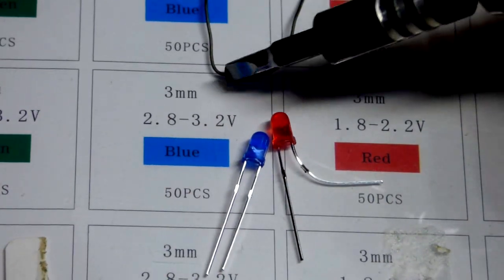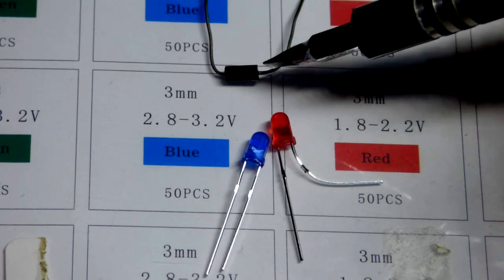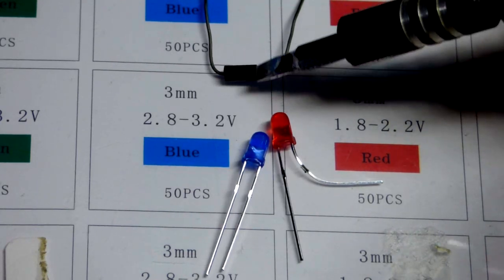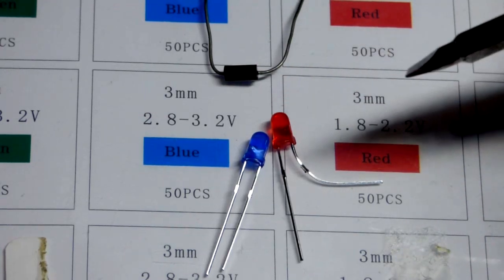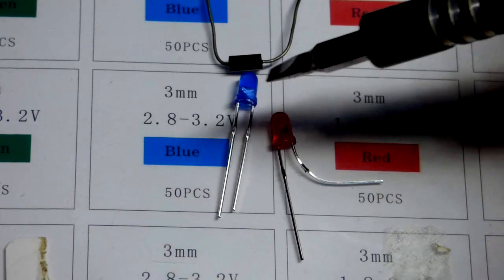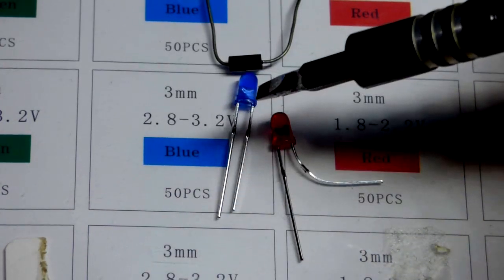As you can see there, 2.8 to 3.2 volts it says on there. Rectifier diodes, these are silicon, they basically only need about 0.6 to 0.7 volts before they start conducting. There's a gray band right there. The gray band is the cathode. I know it's not showing up on camera.